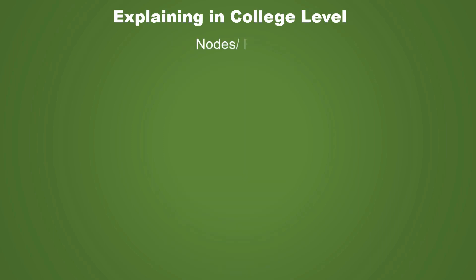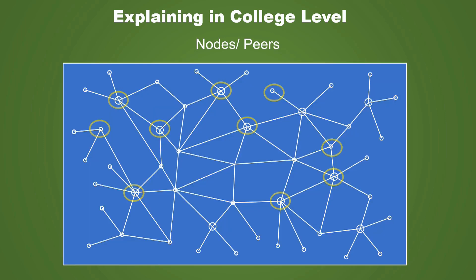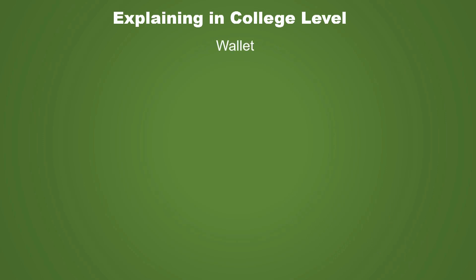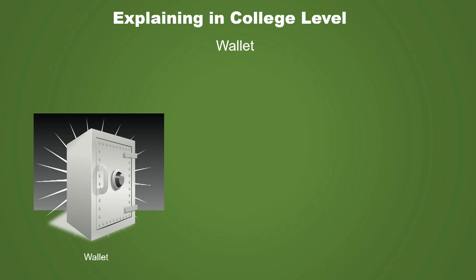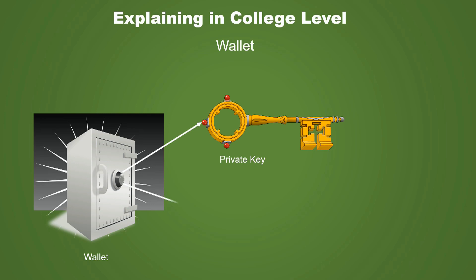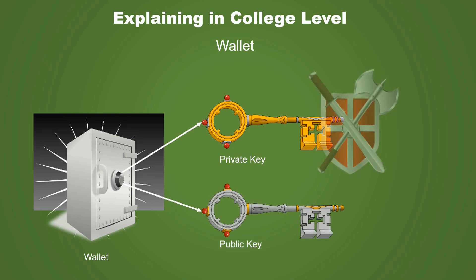Now let's move on to the next term — Nodes or Peers. The computer systems participating in the blockchain network which help in completing transactions are called nodes or peers. These highlighted points are some of the nodes in the network. Next is the Wallet. A wallet is a digital storage used to store your digital money — in this case, Bitcoin. It's basically like your bank account but stores digital currency. A wallet has two keys: a private key and a public key. You have to keep your private key secure. If you lose the private key, you basically lose your wallet and all the money in it. For the college level, just keep in mind that there are two keys and you must keep your private key really secure.